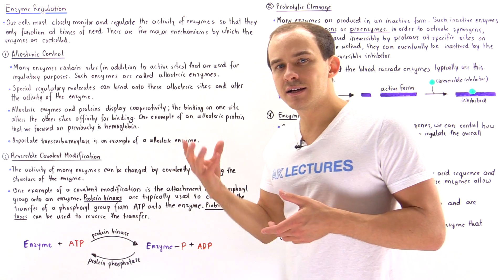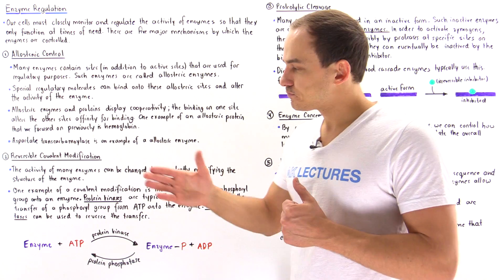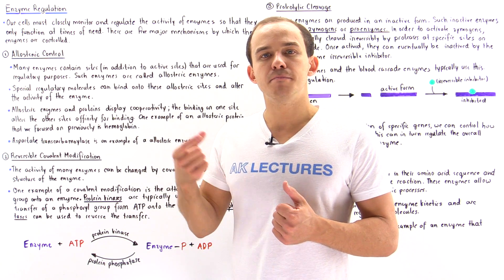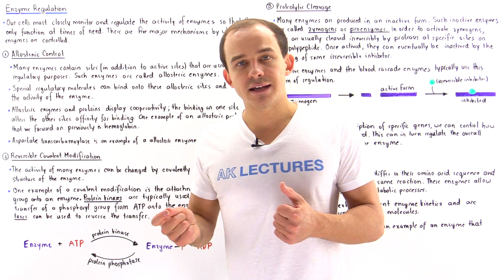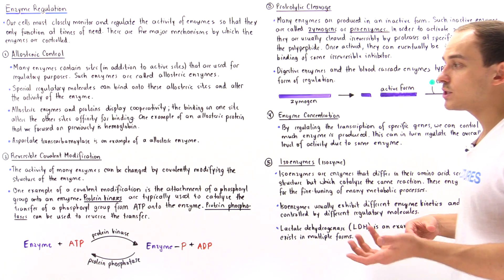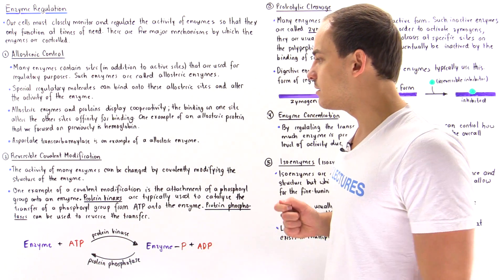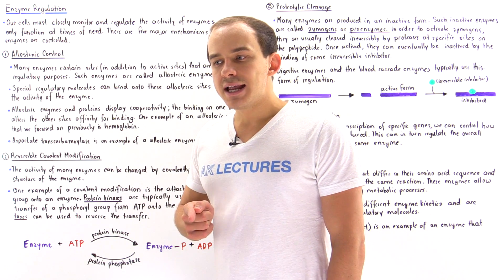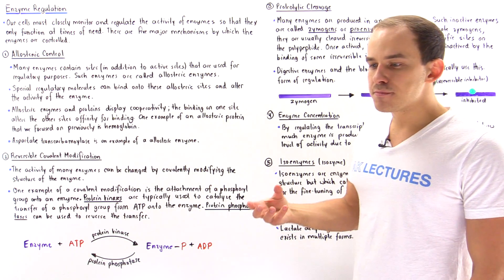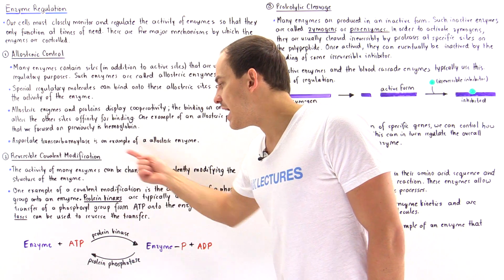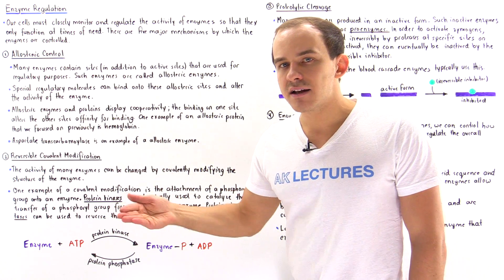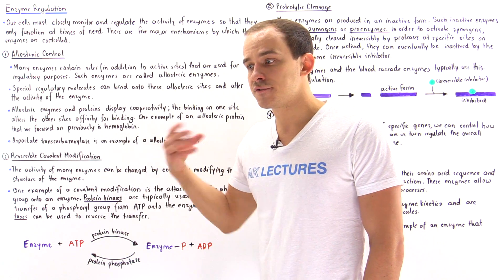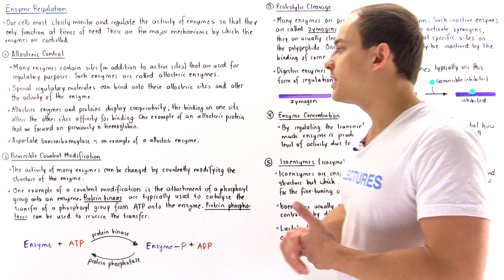The second regulation mechanism is reversible covalent modification. The activity of many enzymes is controlled by creating some type of covalent bond or covalent modification on that particular enzyme. The most common type is the addition of a phosphoryl group using an ATP molecule. Inside our body we have many different types of protein kinases which catalyze the transfer of a phosphoryl group from ATP onto the enzyme, and by transferring that phosphoryl group, this can activate or inactivate the activity of that enzyme.